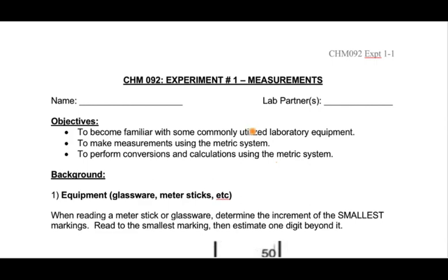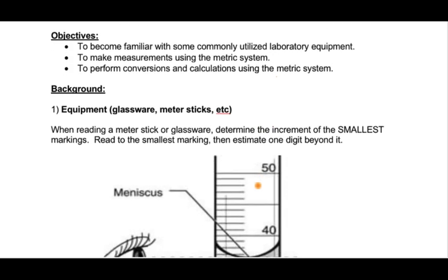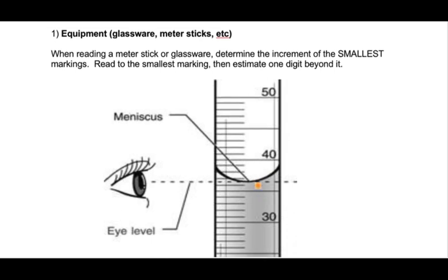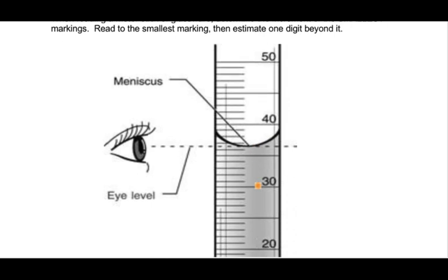The sequence of measurements here does not completely follow the sequence in the report sheet, but that's okay. First, let's talk about measuring the volume in a graduated cylinder. There are attractive forces between the water molecules and the glass molecules at the surface, which actually causes the water to rise up on the ends — we refer to that as a meniscus.